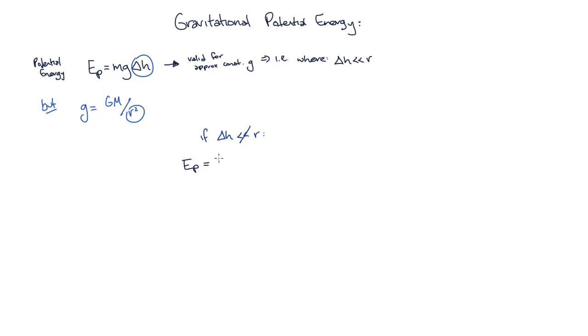This equation is E equal to big G multiplied by both of the masses times the inverse of the initial distance minus the inverse of the final distance between the masses.